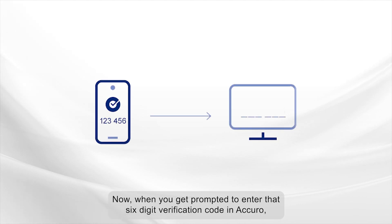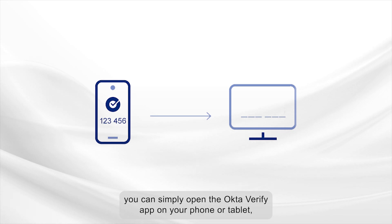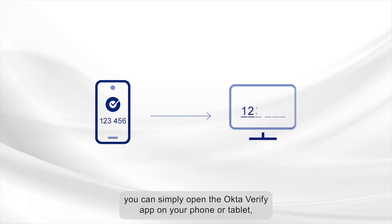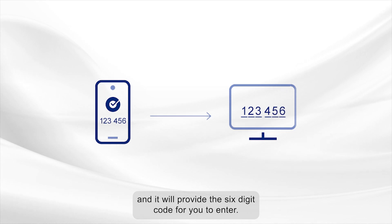Now, when you get prompted to enter that six-digit verification code in Akuro, you can simply open the Okta Verify app on your phone or tablet, and it will provide the six-digit code for you to enter.